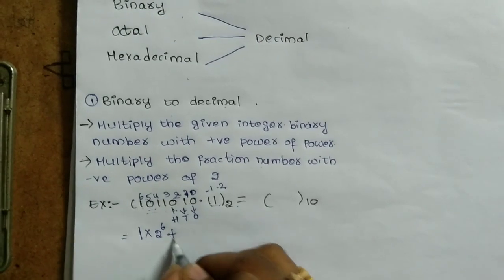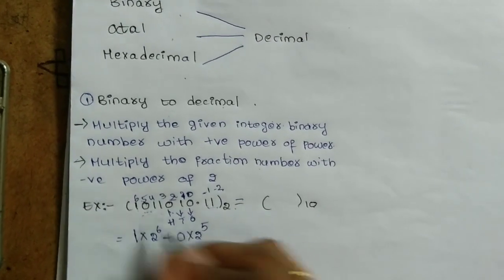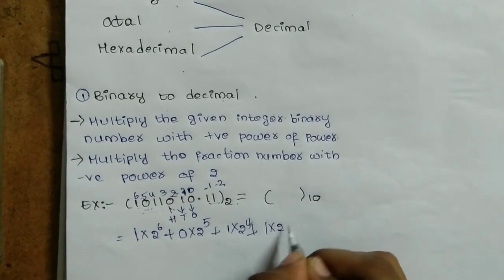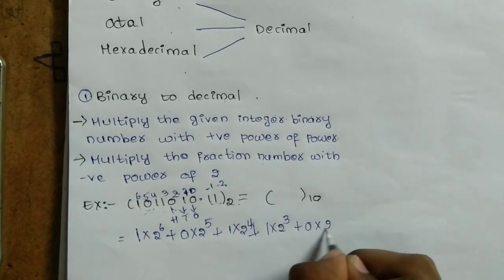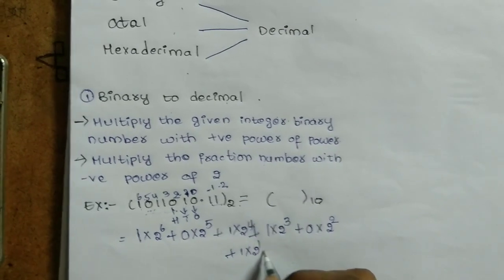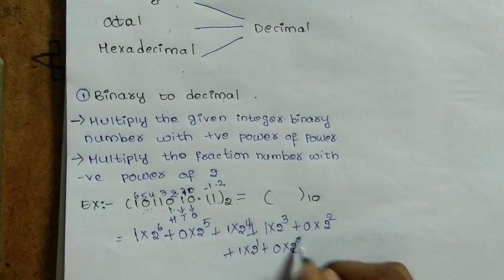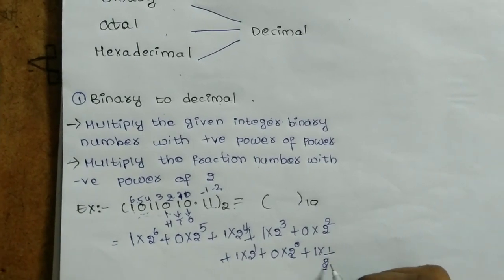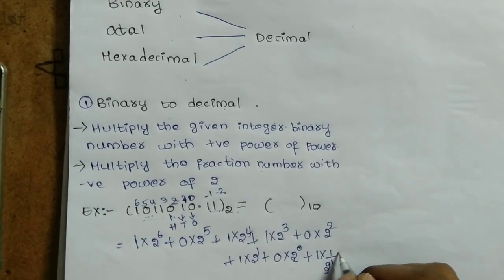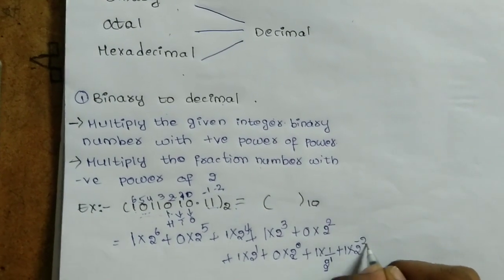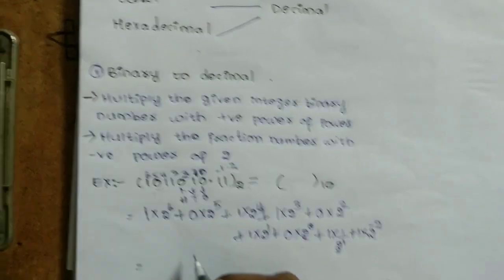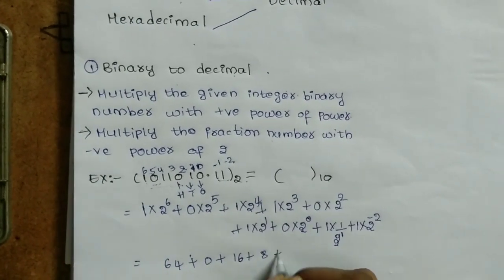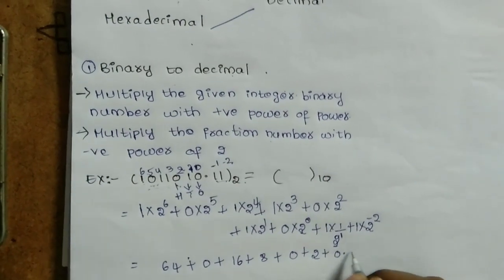We go to the calculation part: 1 × 2⁶ + 0 × 2⁵ + 1 × 2⁴ + 1 × 2³ + 0 × 2² + 1 × 2¹ + 0 × 2⁰, plus the negative powers: 1 × (1/2¹) and 1 × (1/2²). Calculating: 64 + 0 + 16 + 8 + 0 + 2 + 0 + 0.5 + 0.25.